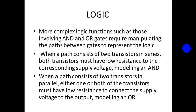The disadvantages of CMOS are slow switching speed and that it can be easily destroyed by static electricity. More complex logic functions, such as those involving NAND or NOR gates, require manipulating the path between gates to represent the logic. When a path consists of two transistors in series, both transistors must have low resistance to connect to the corresponding supply voltage. When a path consists of two transistors in parallel, either one or both transistors must have low resistance to connect the supply voltage to the output.